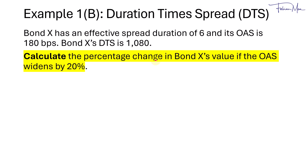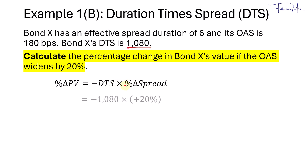Next, calculate the percentage change in Bond X's value if the OAS widens by 20%. We take the negative of DTS times the percentage change in the spread. The DTS is 1080 and the percentage change in the spread is positive 20%, giving us negative 216 basis points, or in percentage terms, negative 2.16%.